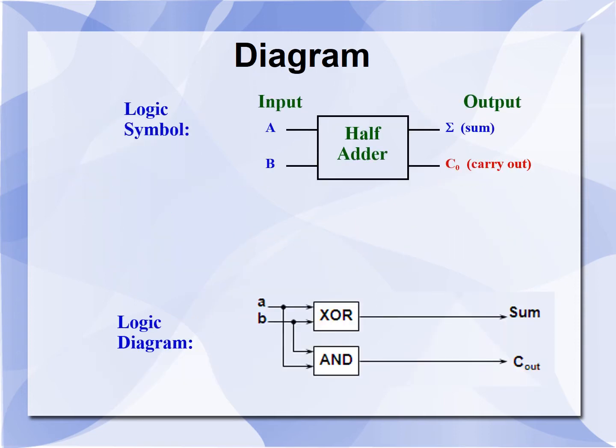The block diagram of the half-adder is shown here. A and B are the inputs. We have the half-adder and two outputs: sum and carry. The logic diagram for the half-adder uses an XOR gate and an AND gate. The two inputs A and B are fed to the XOR gate as well as to the AND gate to get sum and carry.